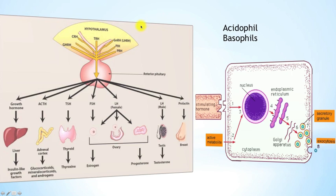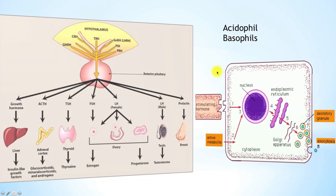To recap: releasing hormones from the hypothalamus travel through the portal circulation to the anterior pituitary gland, where they act on either acidophils or basophils. Acidophils are the lactotrophs and somatotrophs, which produce prolactin and growth hormone respectively. Basophils include corticotrophs producing ACTH — which acts on the adrenal cortex to produce glucocorticoids like cortisol — and thyrotrophs, which stimulate the thyroid gland to produce thyroxine and increase the basic metabolic rate.